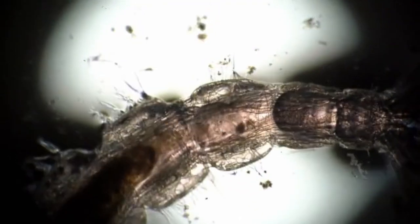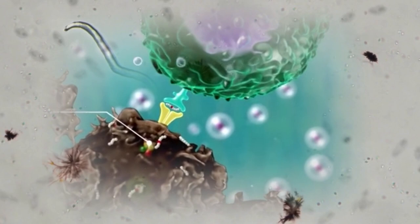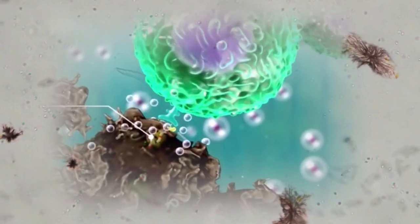Sand fleas, scientifically known as tunga penetrans, are parasitic insects that feed on the blood of live hosts, including humans.